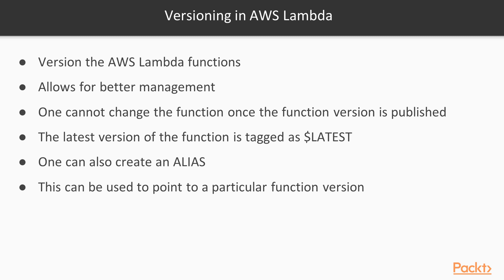Once a version has been published, it cannot be changed, so you would have multiple versions of your function. If you wanted your application to keep pointing to a particular version, you can actually create an alias. An alias can be used to point to a particular version of an AWS Lambda function.